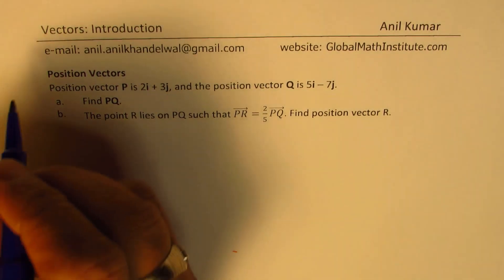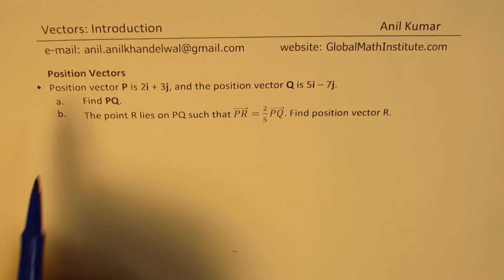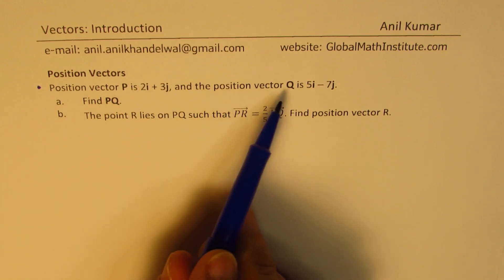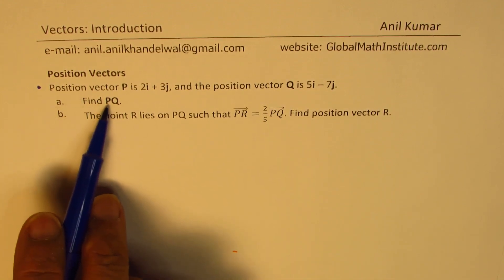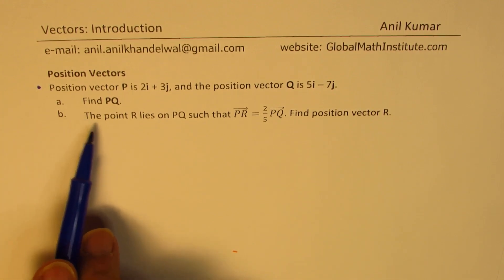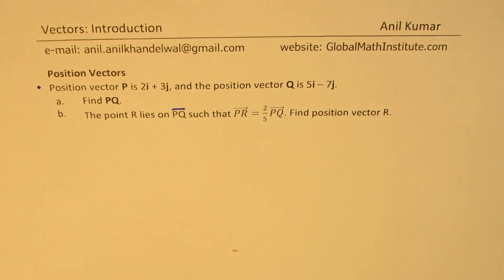Now we are taking an example to understand the topic on position vectors. We are given that the position vector P is 2i plus 3j and the position vector Q is 5i minus 7j. We need to find the vector PQ. Part B is the point R lies on PQ such that PR is two-fifths of PQ. Find position vector R. So that's the question for you.